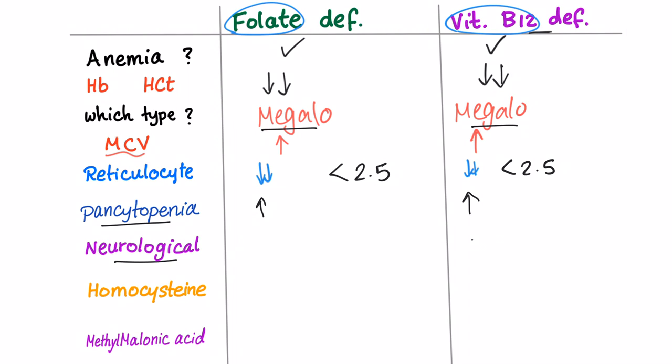Neurological. Only in B12 deficiency. Folate deficiency never has any neurological problems, unless maybe if caused by drugs. But it will be side effects of drugs, not necessarily the folate. Homocysteine. Both. Elevated in both of them. Methylmalonic acid. Only with the B12.